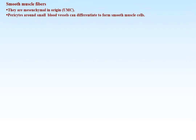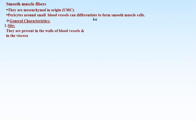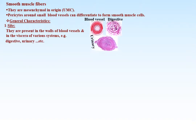Purkinje fibers have a faster rate of conduction than ordinary cardiac muscle fibers. Smooth muscle fibers are mesenchymal in origin; pericytes around small blood vessels can differentiate to form smooth muscle cells. Smooth muscle fibers are present in the walls of blood vessels and in the viscera of various systems such as digestive, urinary, and others.